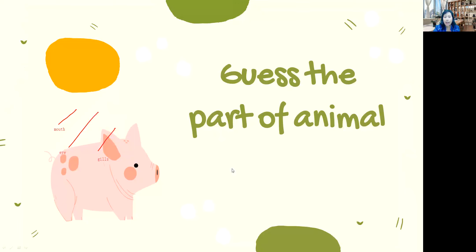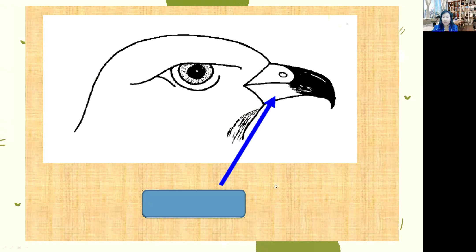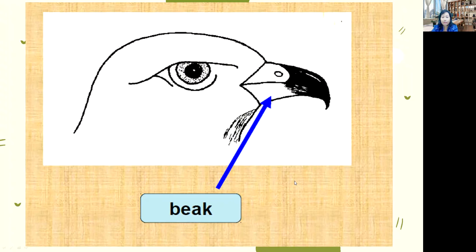Now let's have a guessing game — you guess the body part of this animal. It's pink. What is the part of an animal? Students answered: beak. Let's see if you are correct. Very good — correct, it is a beak.